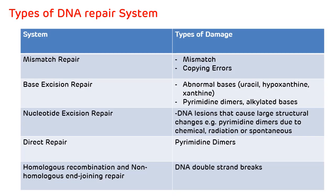This table shows the DNA repair system along with the type of damage corrected by it. Mismatch repair corrects mismatches and copying errors. Base excision repair corrects abnormal bases like uracil, hypoxanthine, and xanthine, and also removes pyrimidine dimers and alkylated bases. Nucleotide excision repair removes pyrimidine dimers occurring due to chemotherapy, radiotherapy, or spontaneously. Direct repair corrects pyrimidine dimers, and homologous recombination and non-homologous end joining repair corrects DNA double strand breaks.